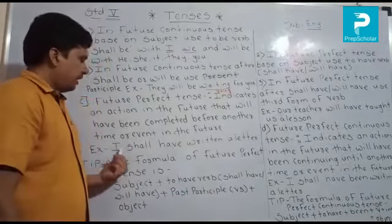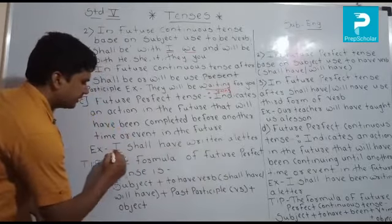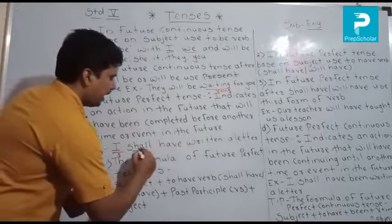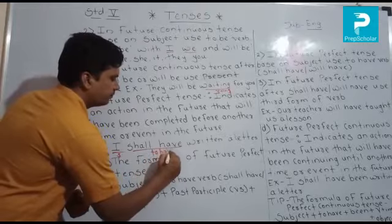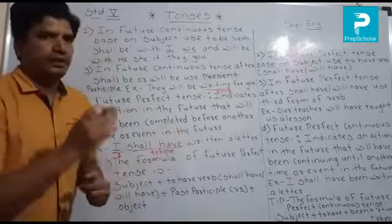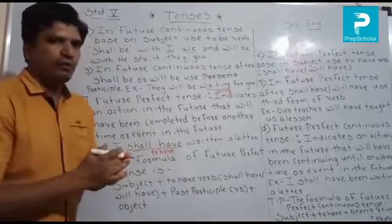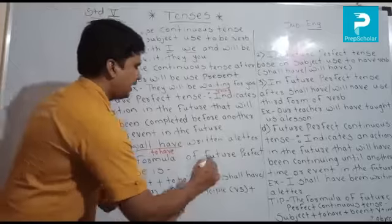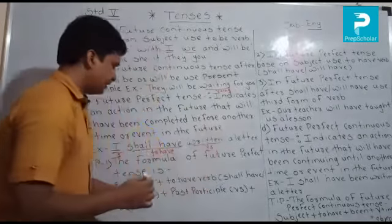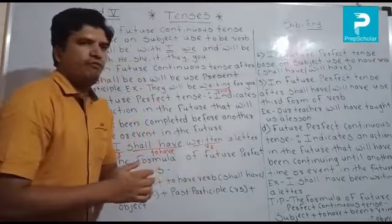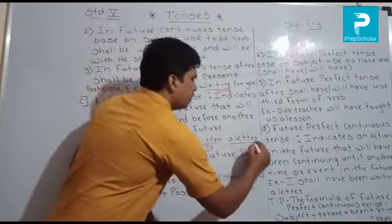Example: I shall have returned a letter. Here, 'I' is the subject. 'Shall have' is the to have verb — it is the future form of the to have verb. 'Return' is the third form of the verb, the past participle. And 'a letter' is the object.